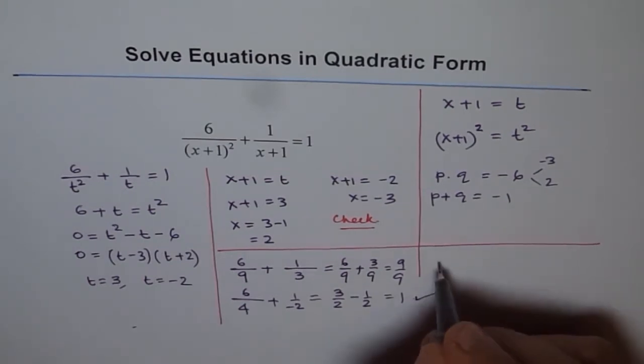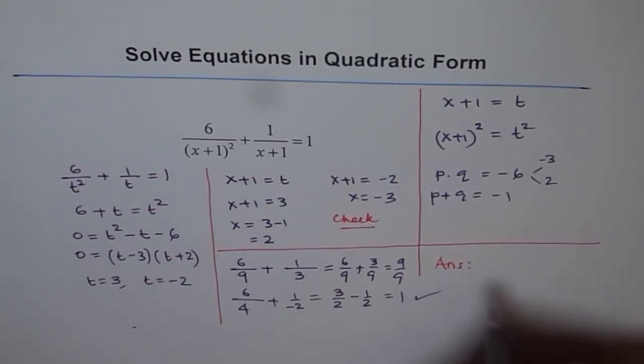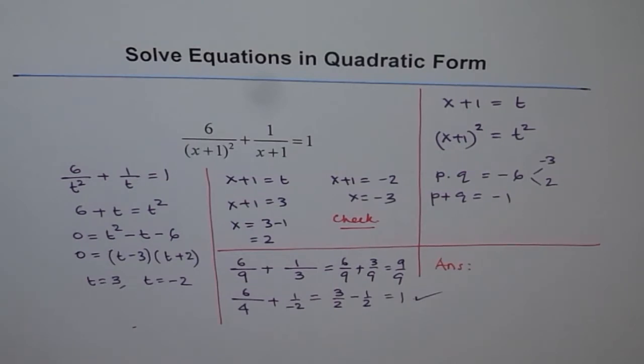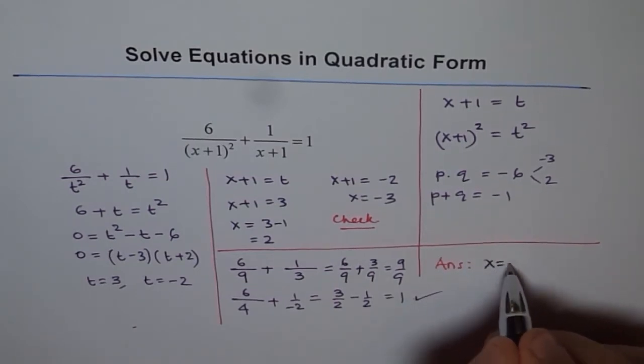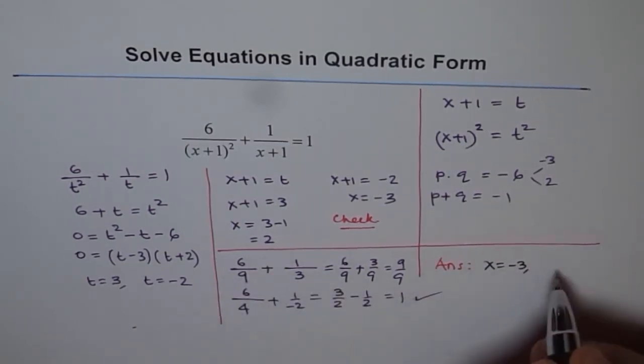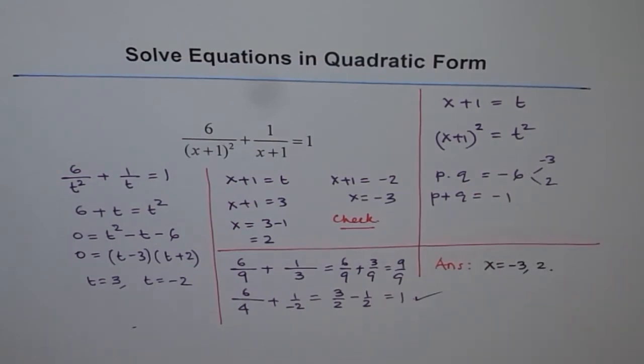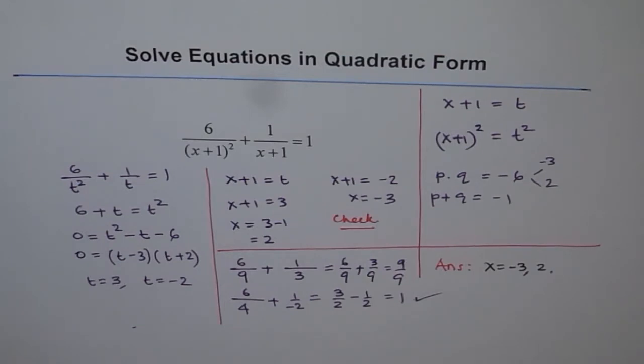Therefore, we can write down our answer as x is equal to minus 3 or 2. So that is how we can solve this rational equation by transforming it into a quadratic form and then utilizing all the skills which we have learned for factoring. Thank you.